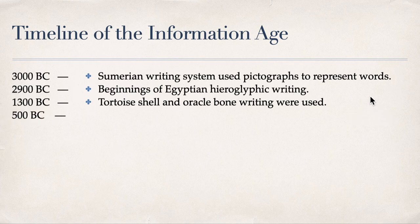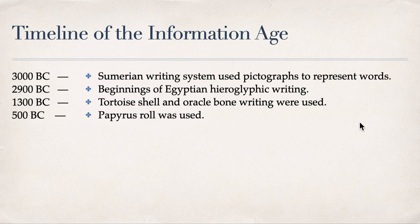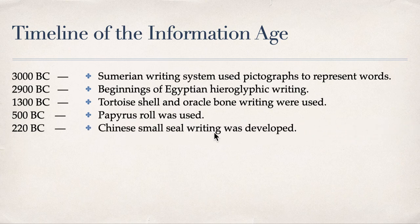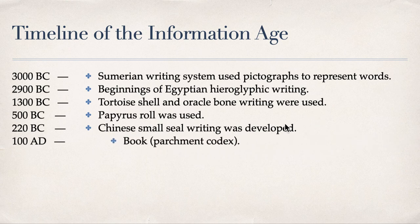In 500 BC, the papyrus roll was used in Egypt. Around 220 BC, Chinese small seal writing was developed. And around 180 BC, the first book called the Parchment Codex was created.